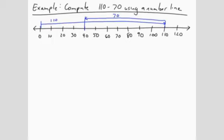and then 70 to the left. The result is 40. 110 minus 70 equals 40.